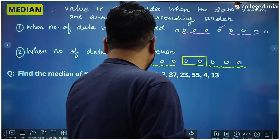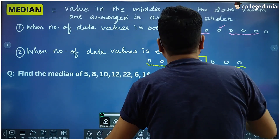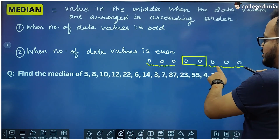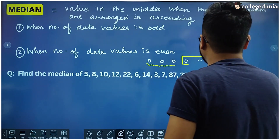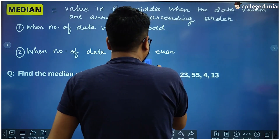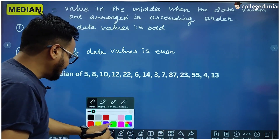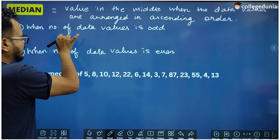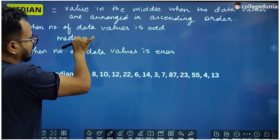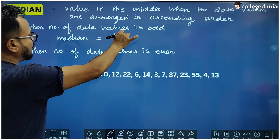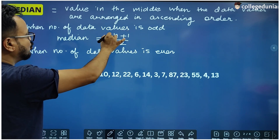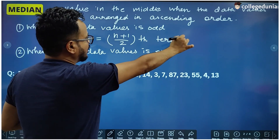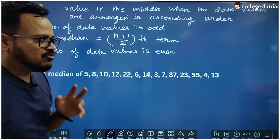There is a formula. Let us say the number of data values is n — for example, n in this case is 8. When the number of data values is odd, the median is the (n+1)/2 th term. That will be the median.